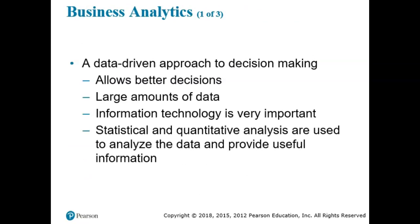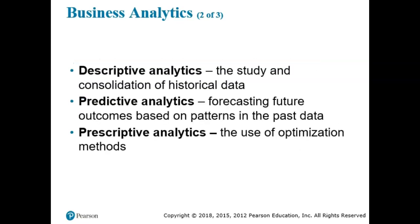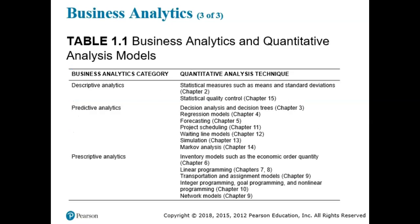A data-driven approach to decision-making allows us to make better decisions with large amounts of data. Information technology is also very important. Statistical and quantitative analysis are used to analyze data and provide useful information. There are three types: descriptive analytics is the study and consolidation of historical data; predictive analytics is forecasting future outcomes based on patterns in past data; and prescriptive analytics is the use of optimization methods. Table 1.1 shows the business analytics categories and corresponding quantitative analysis techniques and which chapters cover them.